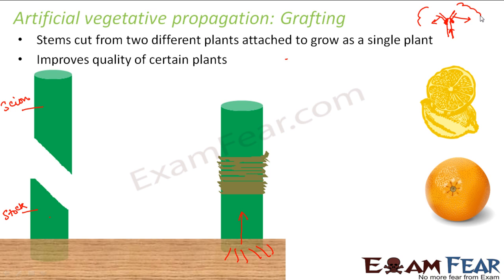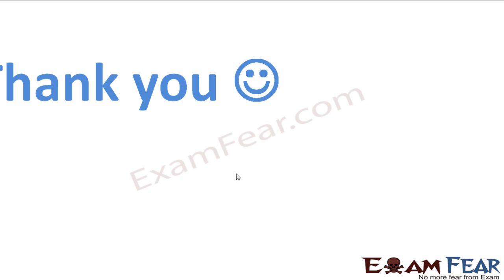With this, I have covered all the asexual modes of reproduction — the different asexual modes in lower unicellular and simple multicellular animals, as well as in plants, including natural and artificial methods of vegetative propagation. I will end my discussion on asexual modes of reproduction. Thank you.